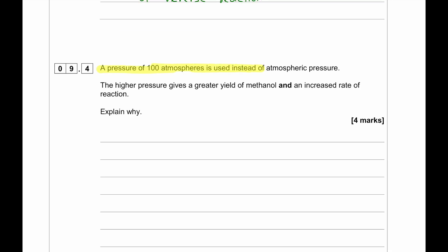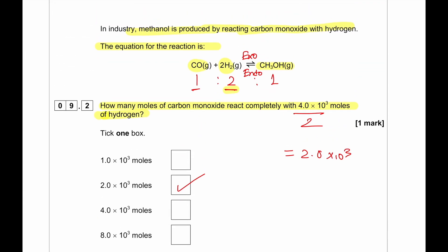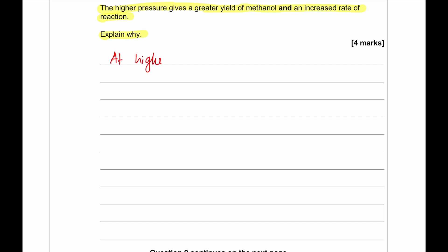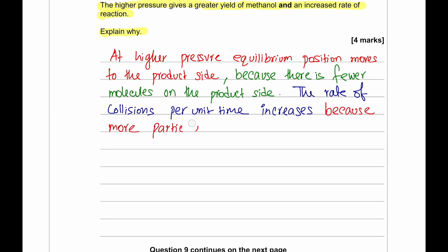A pressure of 100 atmosphere is used instead of atmospheric pressure. The higher pressure gives a greater yield of methanol and an increased rate of reaction. Explain why. If we go back to this particular equation, we will see that in the left hand side we have 3 moles. And on the right hand side we have 1 mole. This means this is a reduction in size almost 300% to 100%, 3 to 1. The answer will be: Higher pressure increases the yield since the equilibrium shifts to the product side because the product has fewer number of molecules. So high pressure favours fewer molecules. The rate of collisions per unit time increases because the reactant particles are more closer together. And as the rate of collision increases, the rate of molecules, product molecules forming per unit time also increases.